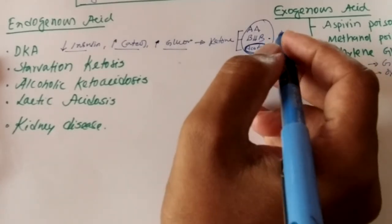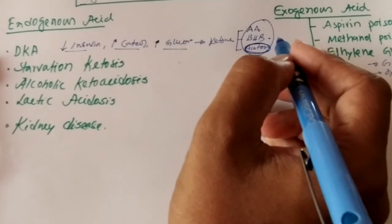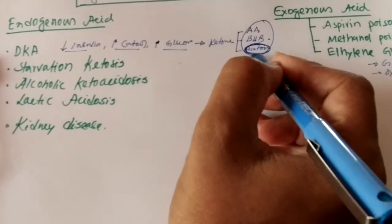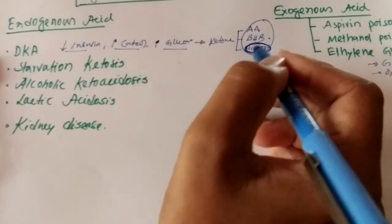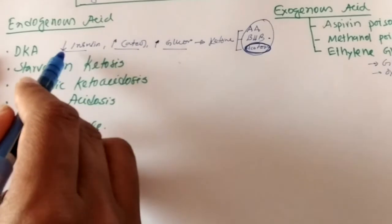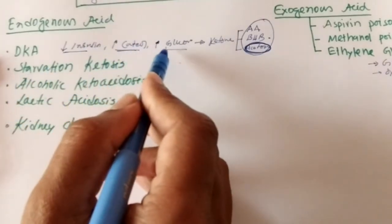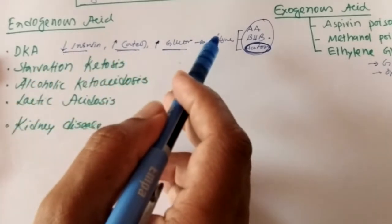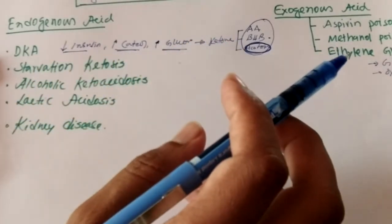When ketone bodies are produced in high amounts, the condition is called ketosis and ketoacidosis. Acetone is exhaled through the patient's lungs, giving the breath a sweet odor. Insulin deficiency, excess catecholamine, and excess glucocorticoid — all these factors lead to high amounts of ketone body formation in diabetic ketoacidosis.